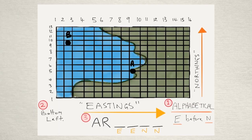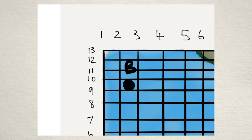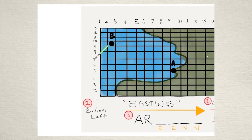Alright so let's say we're looking for the area reference of B. What we'd do to start with is count across for the eastings, one and two, then for the northings start at the bottom and count up one, two, three, etc. up to nine.